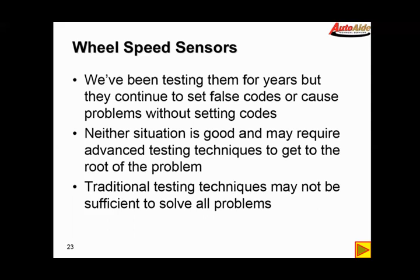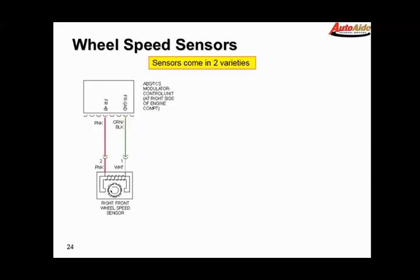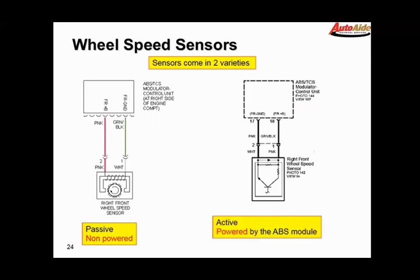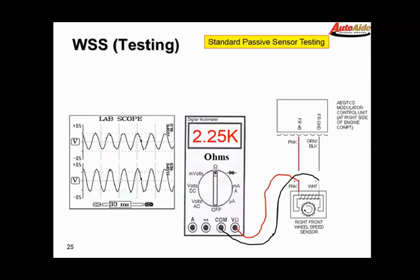Sensors—wheel speed sensors—come in two varieties. On the left we have a passive, non-powered sensor, so this would be an AC generator type or a PM generator type sensor. It would output an AC voltage. On the right we have a powered sensor, typically powered by the ABS module, and this guy would put out some sort of a digital signal.